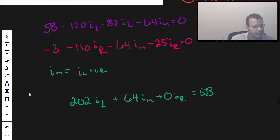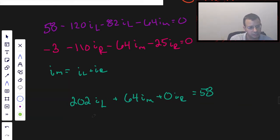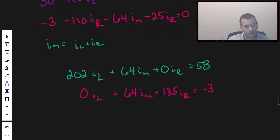Then for the next one, I'm going to have to be careful with the signs. So we're going to have 0 I left plus 64 I middle plus 135, because we have 110 and 25, so it's going to be 135 I right equals negative 3. And now for this, we're going to have 1 I left minus 1 I middle plus 1 I right equals 0.